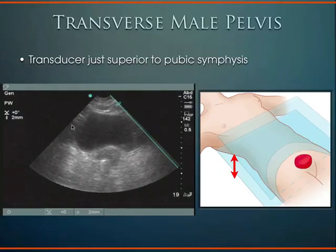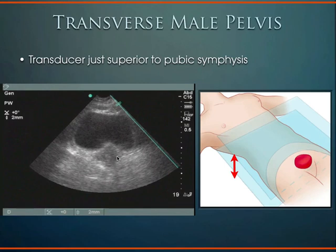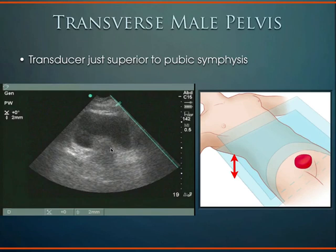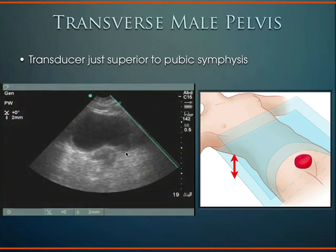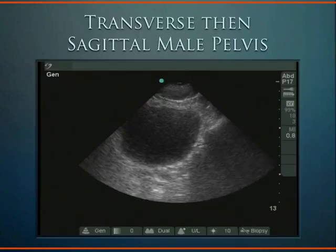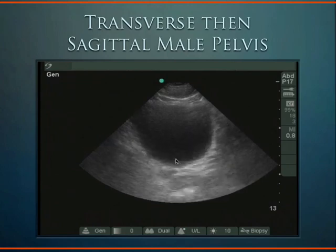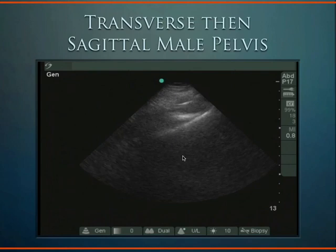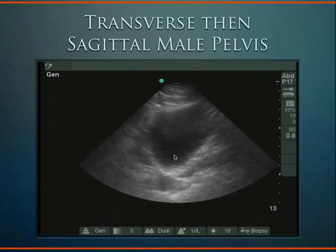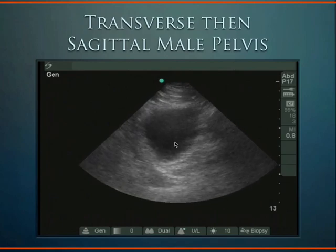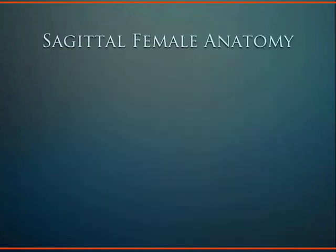In the male pelvis, the transverse view shows a rectangular-shaped bladder with the prostate inferiorly. To assess volume, first obtain the transverse view, then rotate to sagittal. In the transverse plane, measure the anterior-posterior dimension (height) and then the width. Write down the width, unfreeze the machine, and rotate to the sagittal plane — what was the width in transverse becomes the length in sagittal.